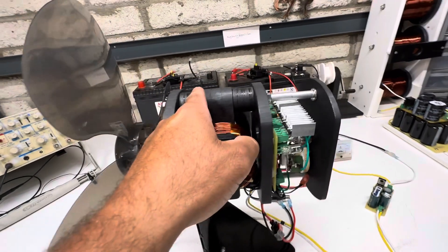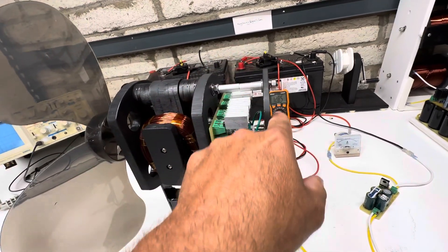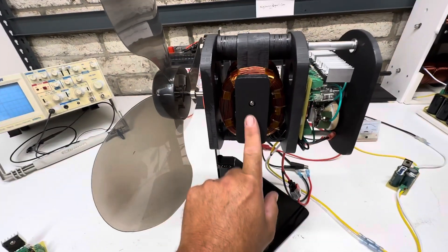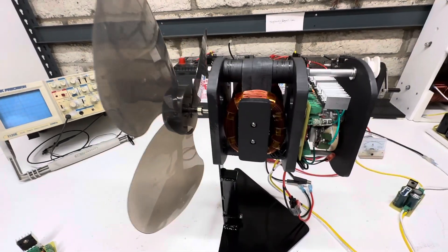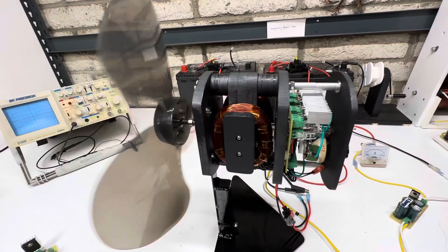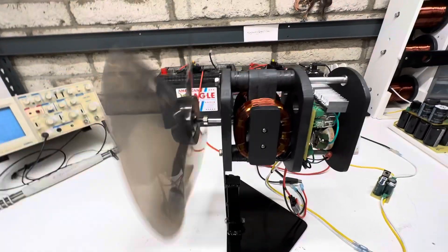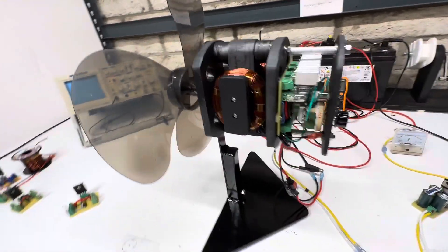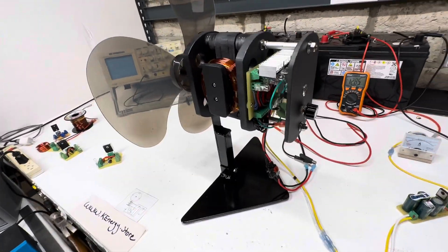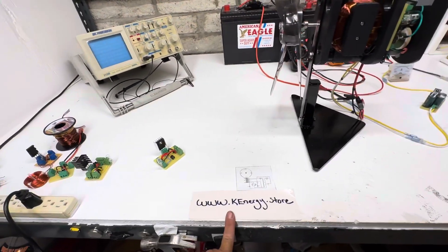And then the bolts are 3/16 and screws are 3/16, shaft is 304. So it's all, you know, it helps with the magnetism to where it runs really smooth. And yeah, so it's available at my store kenergy.store.